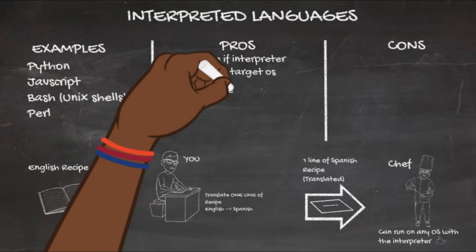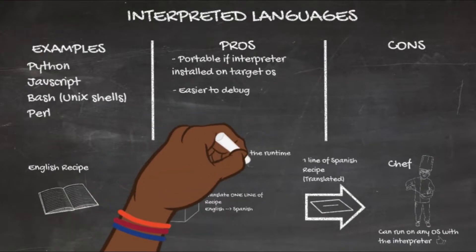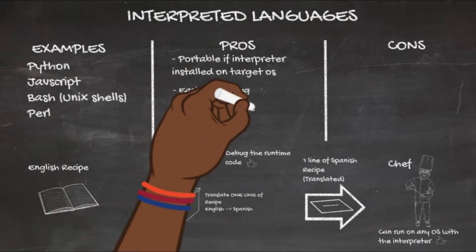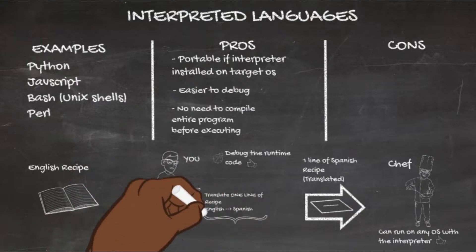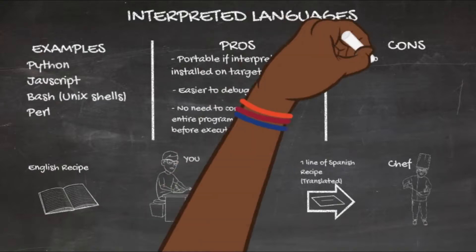Back to the pros of interpreted languages: they are easier to debug because you can debug the actual runtime code — the code in production. With compiled languages you're debugging the source code, and you're assuming that matches what was compiled. If you don't know the exact version or compiler arguments used, those could be different. Also, there's no need to compile the entire program before executing — you can just run it directly.